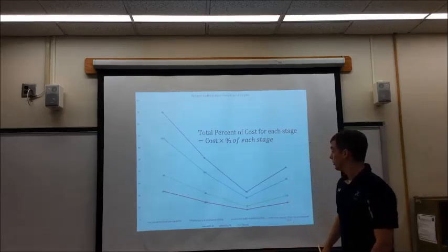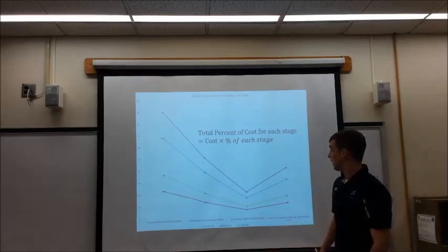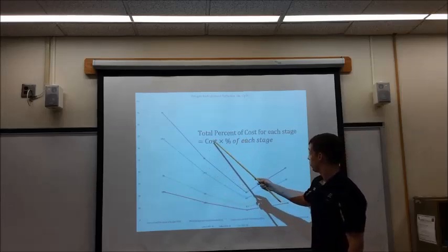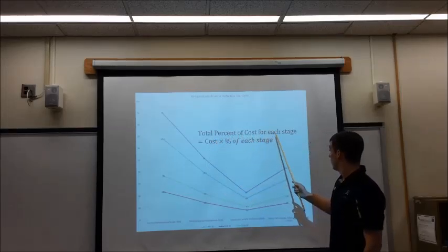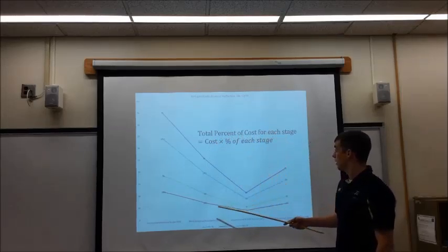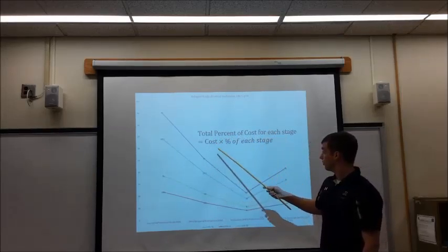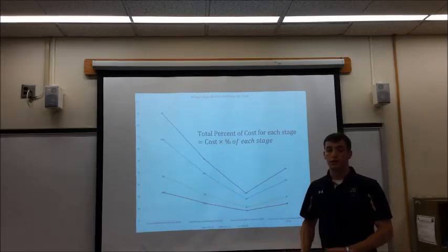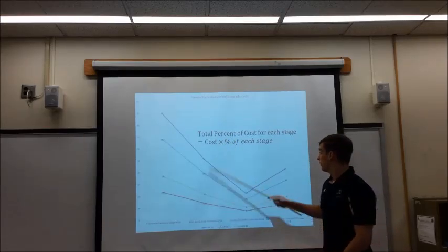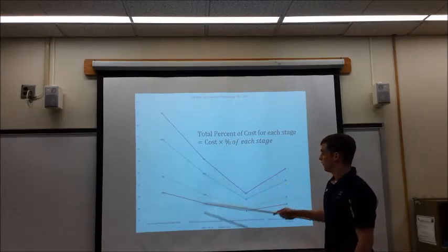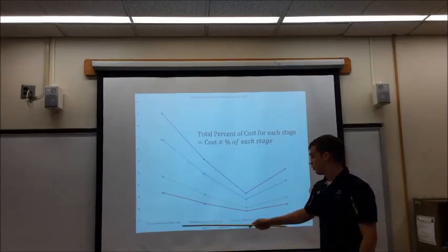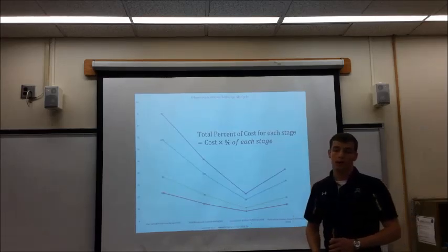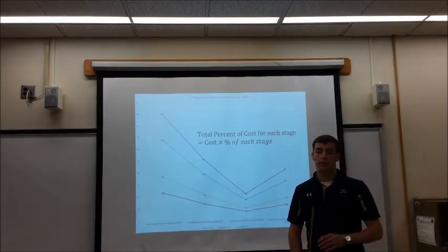This allows us to use the equation where the cost for each stage equals the cost of the alternative times the percentage of each stage — 45%, 25%, 10%, or 20% — which gives us an overall cost estimation for each option.